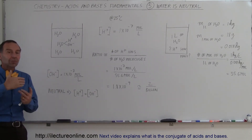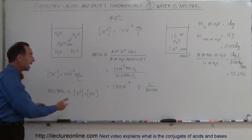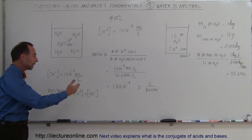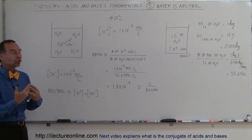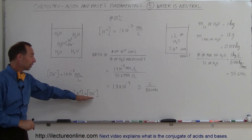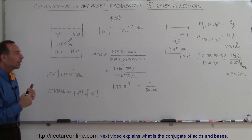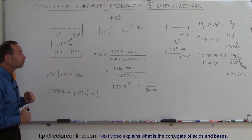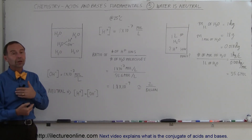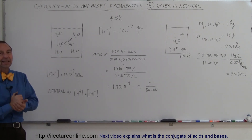If you add a base to the solution, you introduce more hydroxide ions and remove some hydrogen ions, so there will be more hydroxide ions than hydrogen ions, and the aqueous solution will be basic in nature. For an acidic solution the pH will be less than 7; for a basic solution the pH will be greater than 7. You deviate from that neutral point that water sits at when on its own. That's the definition of neutrality, and in later videos we'll see what happens to pH and the acidic or basic properties when we add more hydrogen or hydroxide ions.